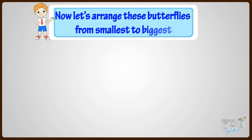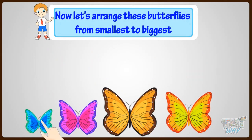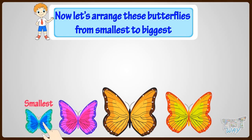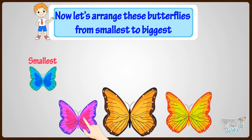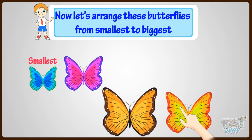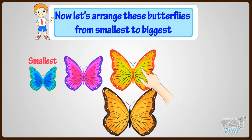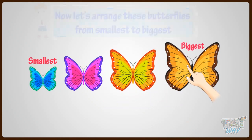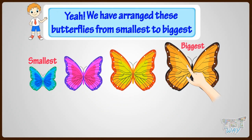Now let's arrange these butterflies from smallest to biggest. This is the smallest, so it will come first. Next, this one is a little bigger, so it comes next. This one is even bigger, so it comes next. This one is the biggest of all, so it comes last. We have arranged these butterflies from smallest to biggest.